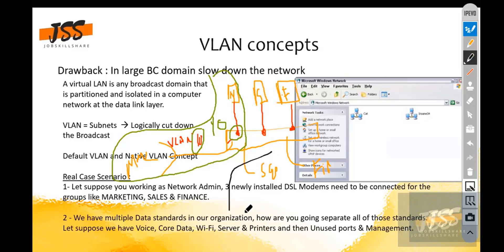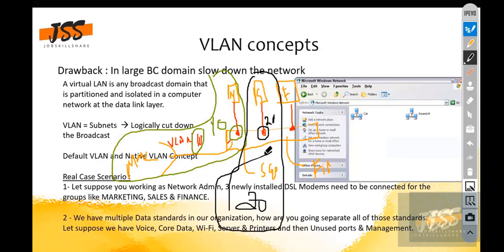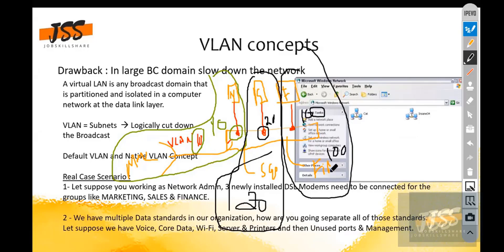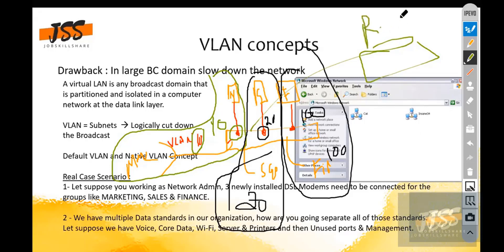Similarly, sales can be under VLAN 20 and finance under VLAN 100. Each becomes a logical segment and they communicate within their VLAN. However, for inter-VLAN communication you need a router — this is known as router-on-a-stick or a multilayer switch, which we'll cover later.